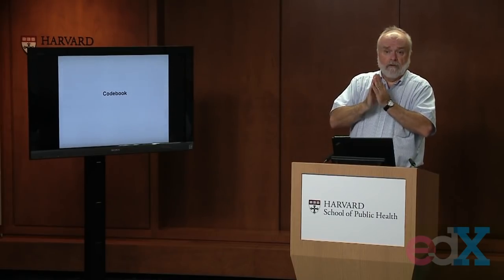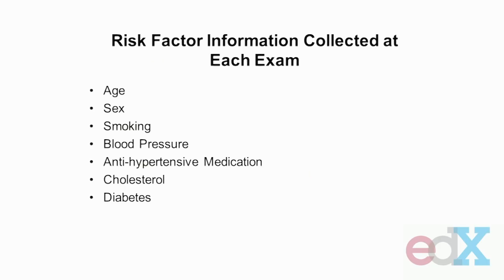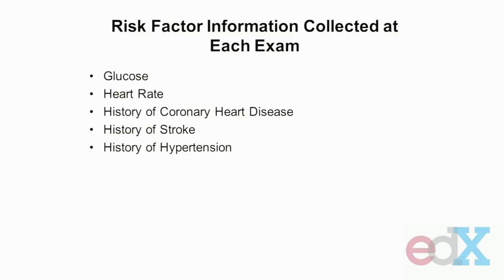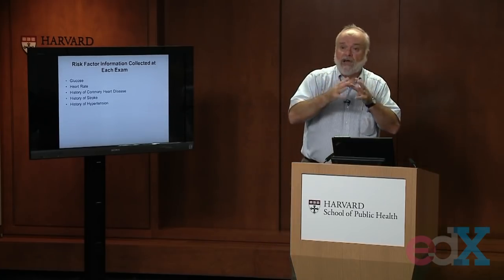This is essentially a very brief overview of the data set itself. What we have are three exam cycles showing the age of each person at that exam, their sex, whether they were a smoker and how much they smoked in terms of cigarettes per day, their blood pressure on both the systolic and diastolic scale, whether they were taking medications to treat hypertension, their total cholesterol levels, their HDL and LDL levels, whether they had diabetes diagnosed at that examination, their glucose levels, their heart rate, and whether they had previously been diagnosed with coronary heart disease, a history of stroke, or a history of hypertension. Those are all the risk factors we'll be looking at.